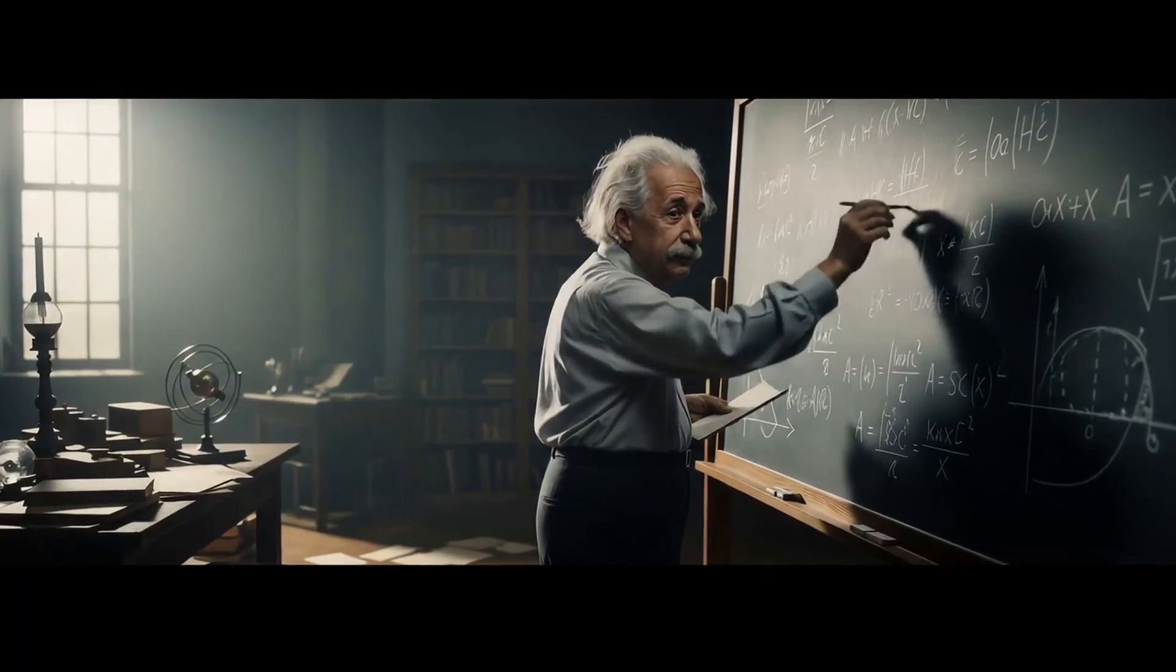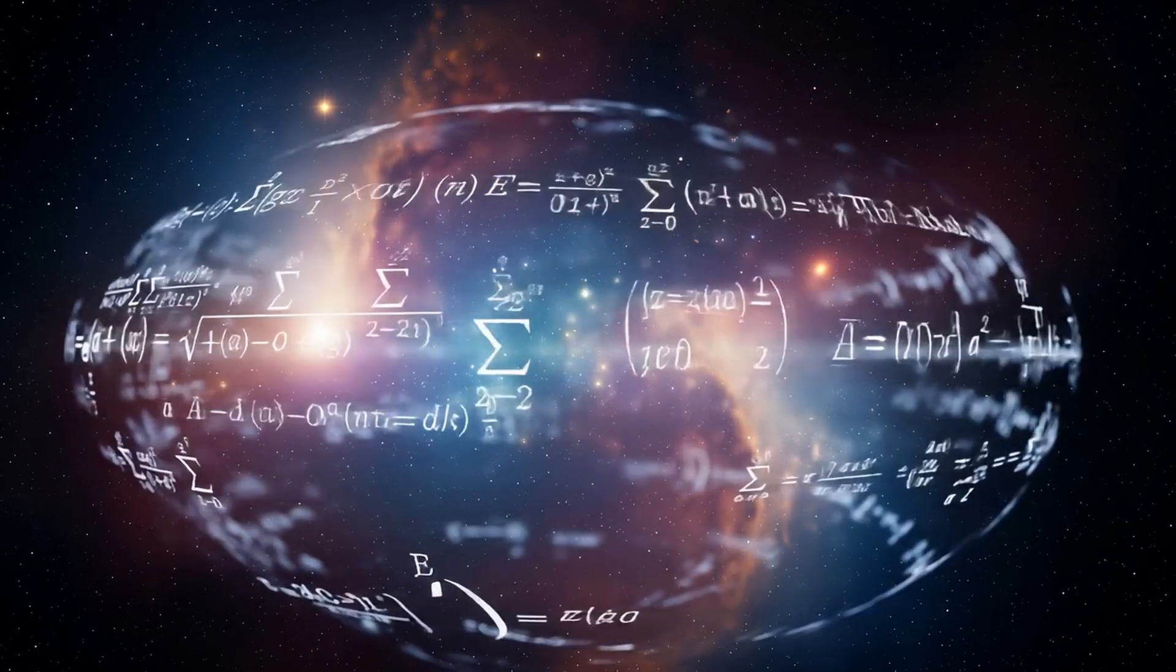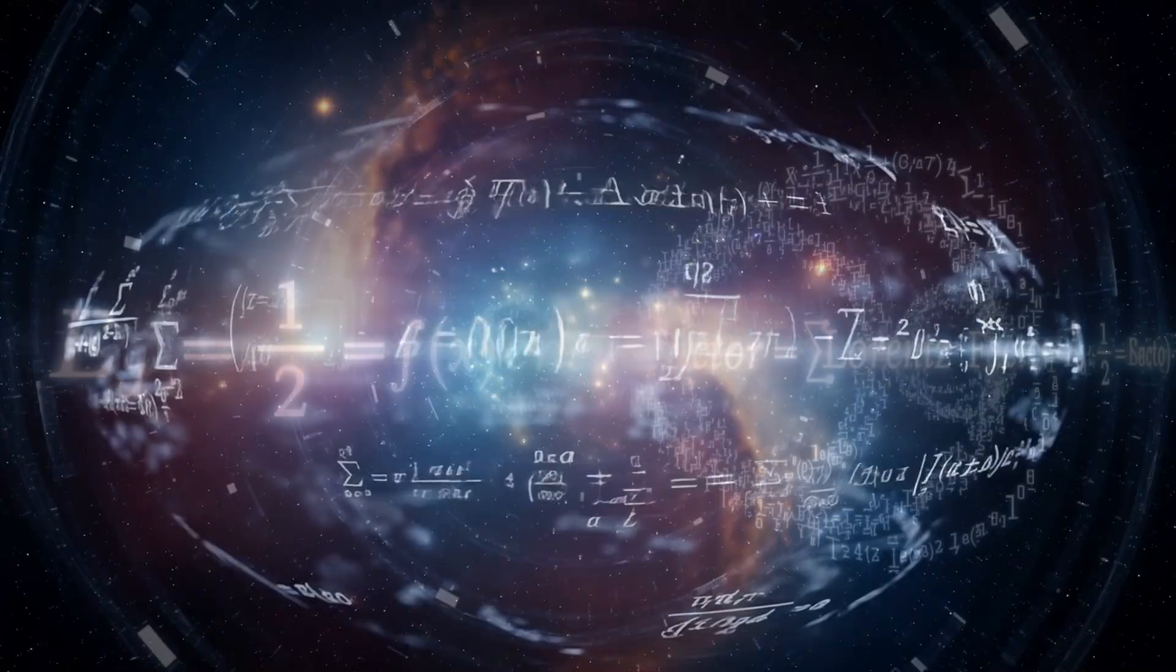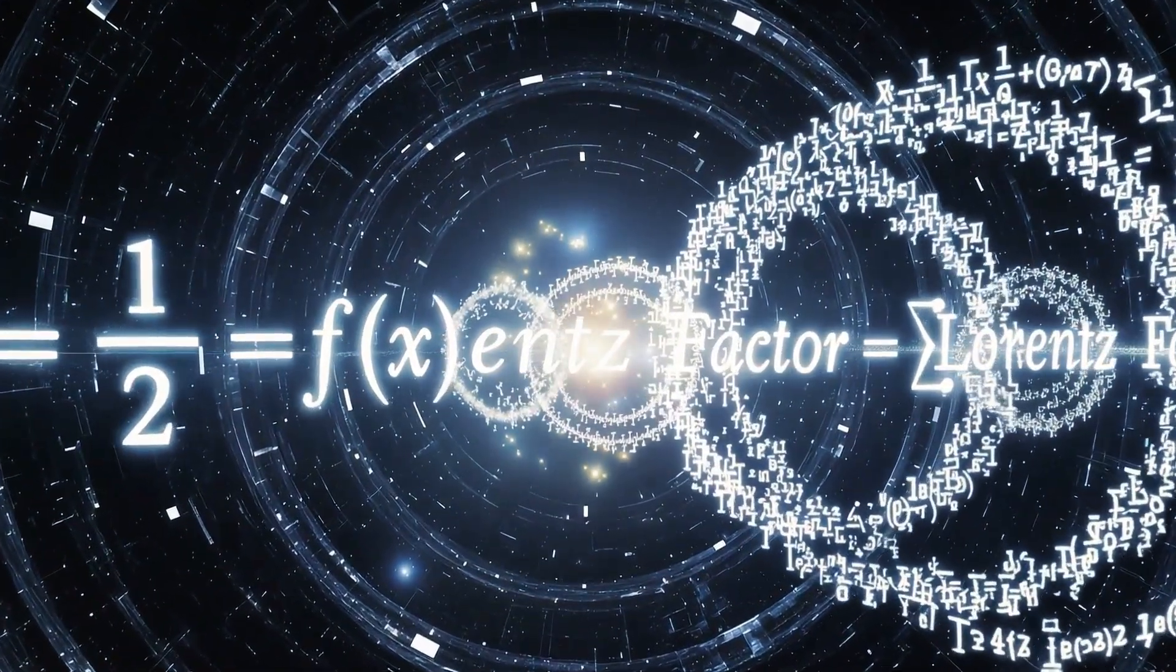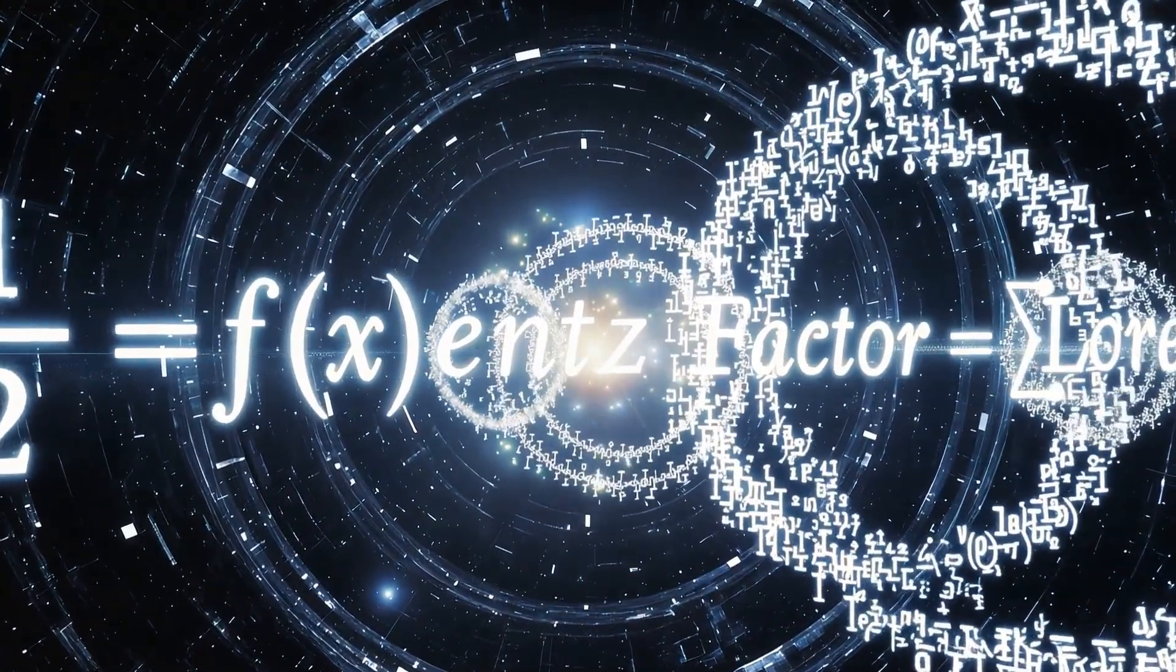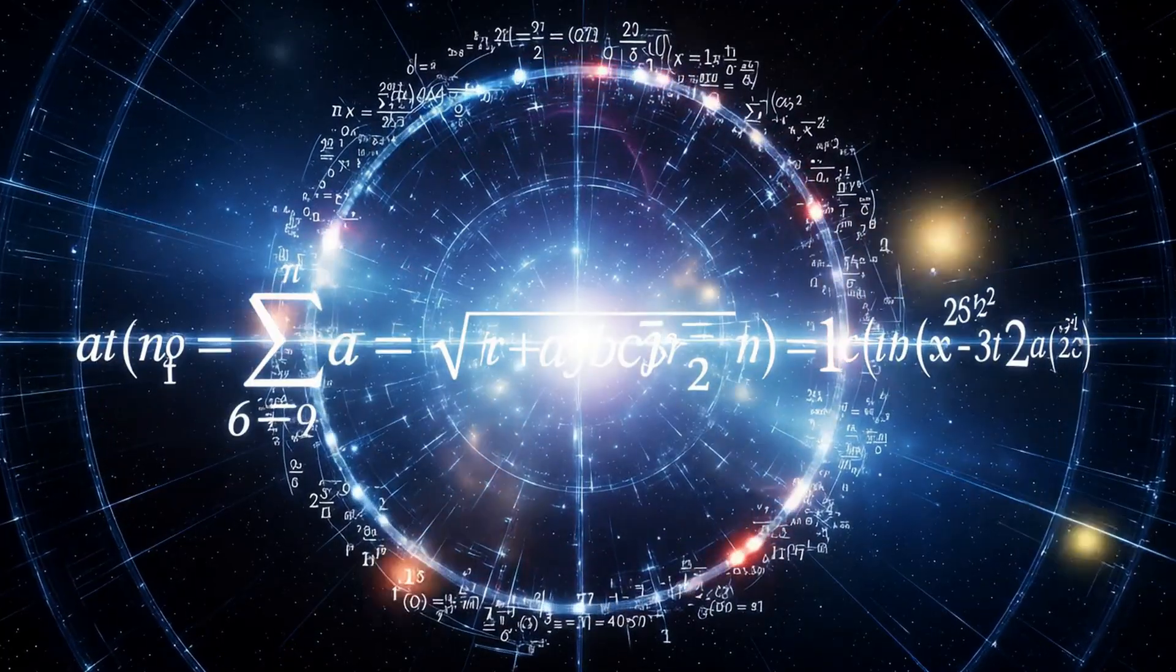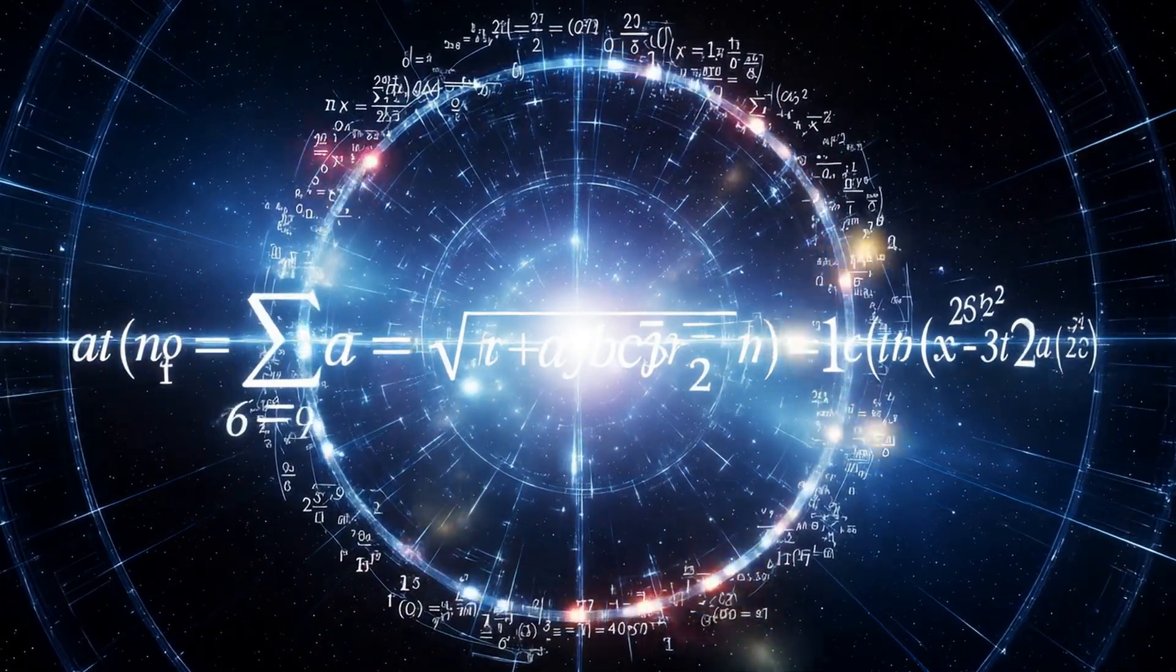Einstein described time dilation using the Lorentz factor, which is 1 divided by the square root of 1 minus velocity squared over the speed of light squared. When we substitute angular frequency for velocity and c equals the qubit axis of 1, we reveal the deeper equation beneath Einstein's: 1 divided by the square root of 1 minus angular frequency squared.